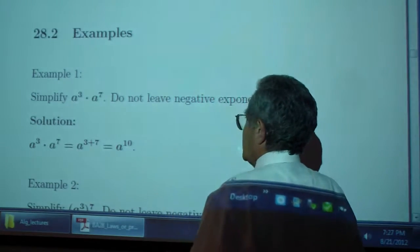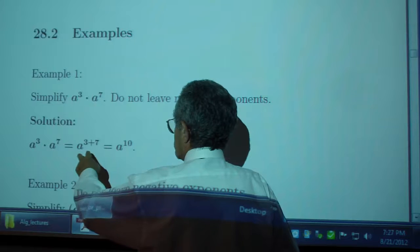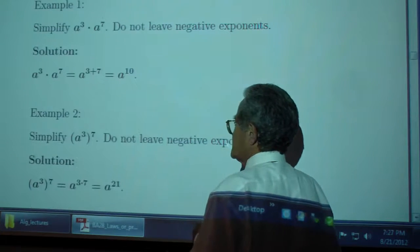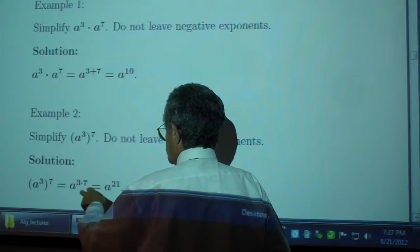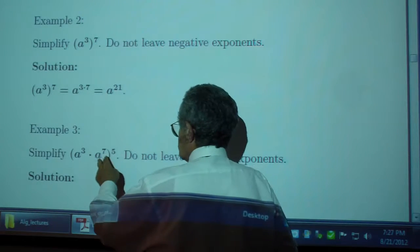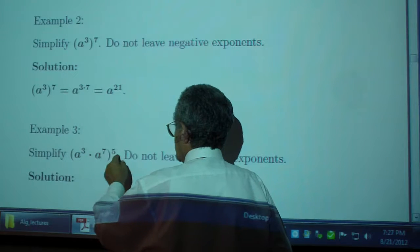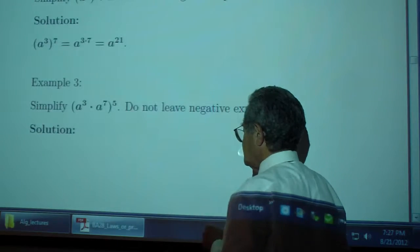Examples. 8 to the 3rd times 8 to the 7th is 8 to the 3 plus 7, or 8 to the 10th. 8 to the 3rd to the power 7 is 8 to the 21. 8 to the 3rd times 8 to the 7th is 8 to the 10th to the power 5, so 8 to the 50th.